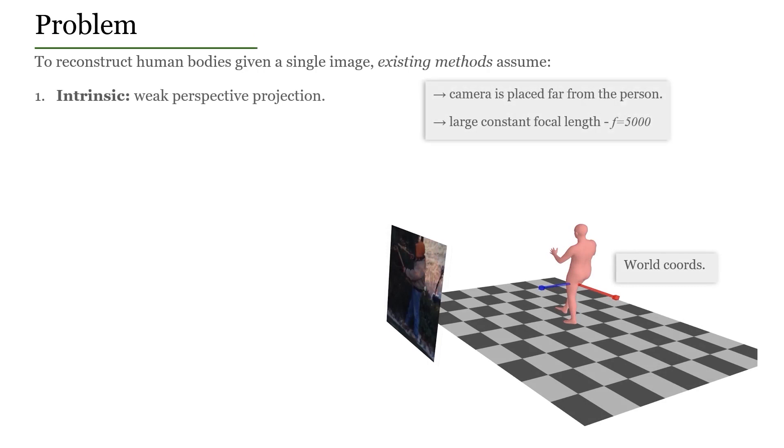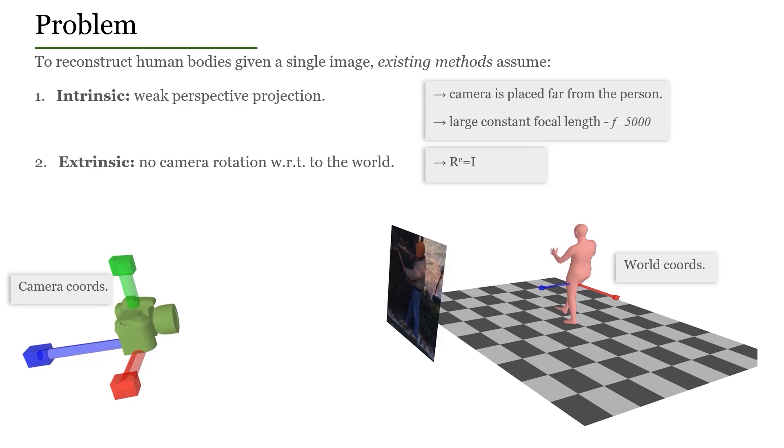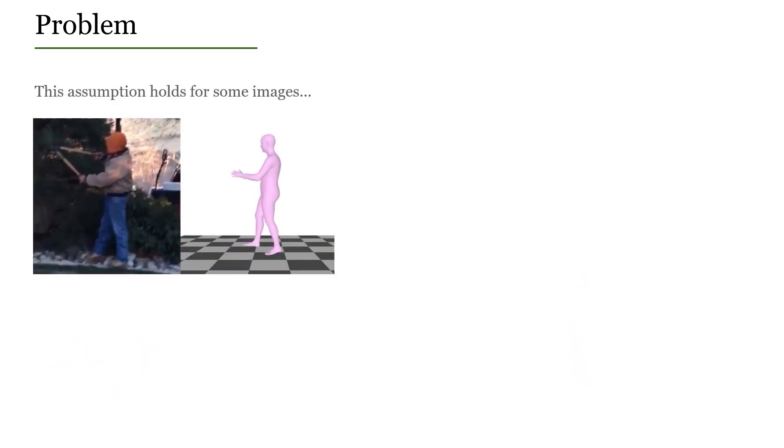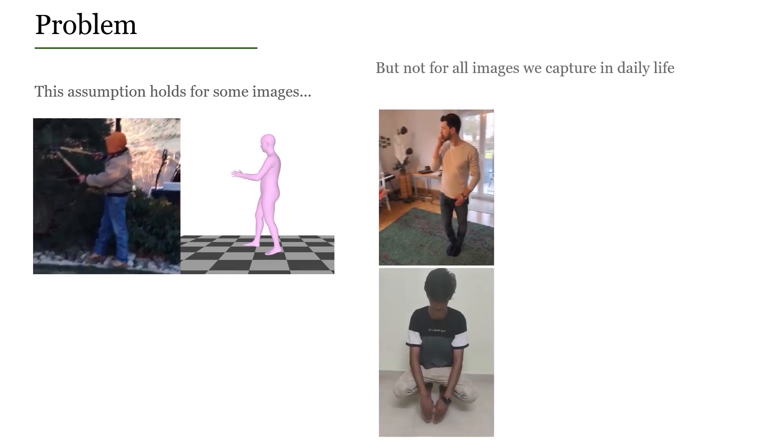Hence, they resort to using unrealistically large focal length values, for example 5000. For the extrinsic parameters, they assume an identity camera rotation. This assumption holds true for some images, but not for all the images that we capture in daily life.